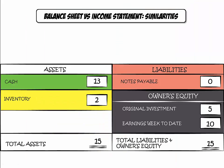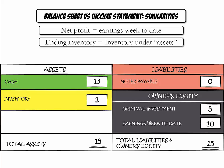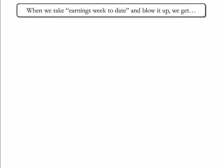By now you will have realized that the balance sheet and the income statement are quite different. However, there are a few similarities. First, our net profit in the income statement is the same as earnings week-to-date on the balance sheet. Second, ending inventory in the income statement is the same as inventory under assets on the balance sheet. Checking these two entries provides one way to potentially identify whether you have made mistakes. When we take our earnings week-to-date and expand it to explain how we got there, we produce the income statement.